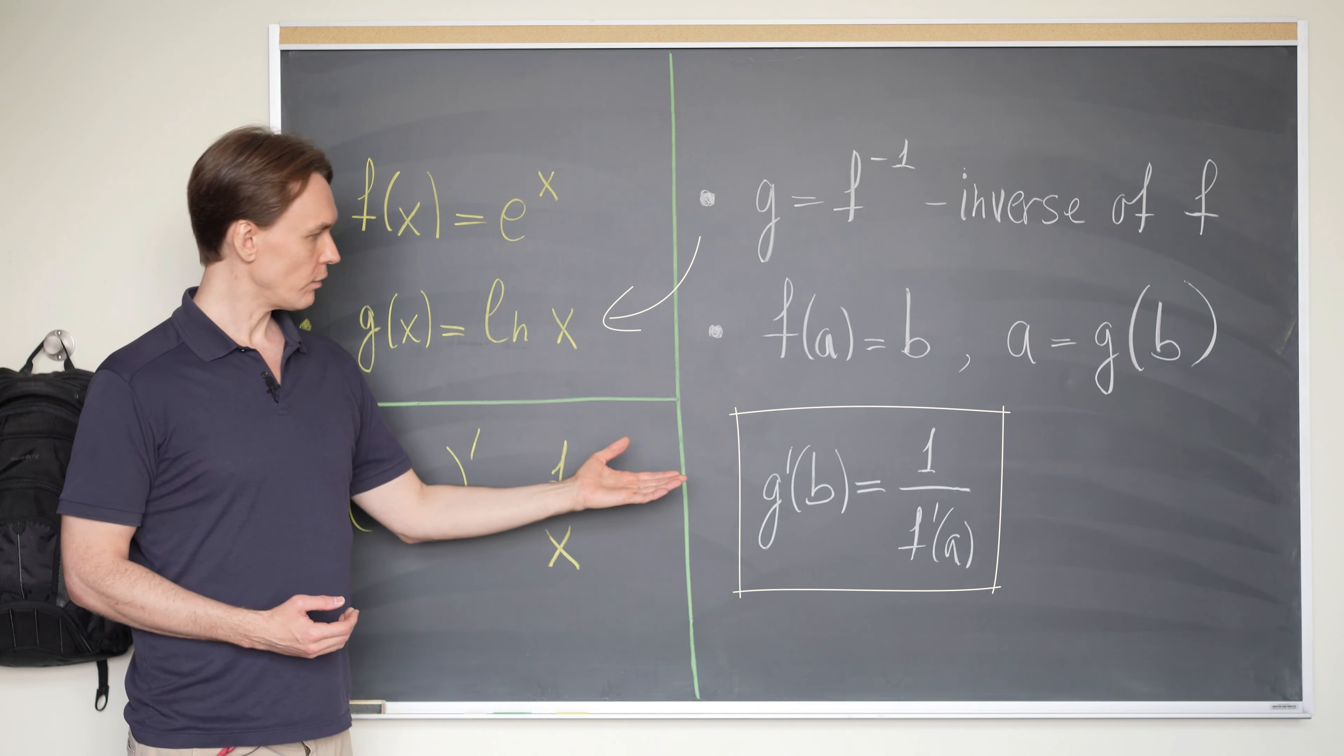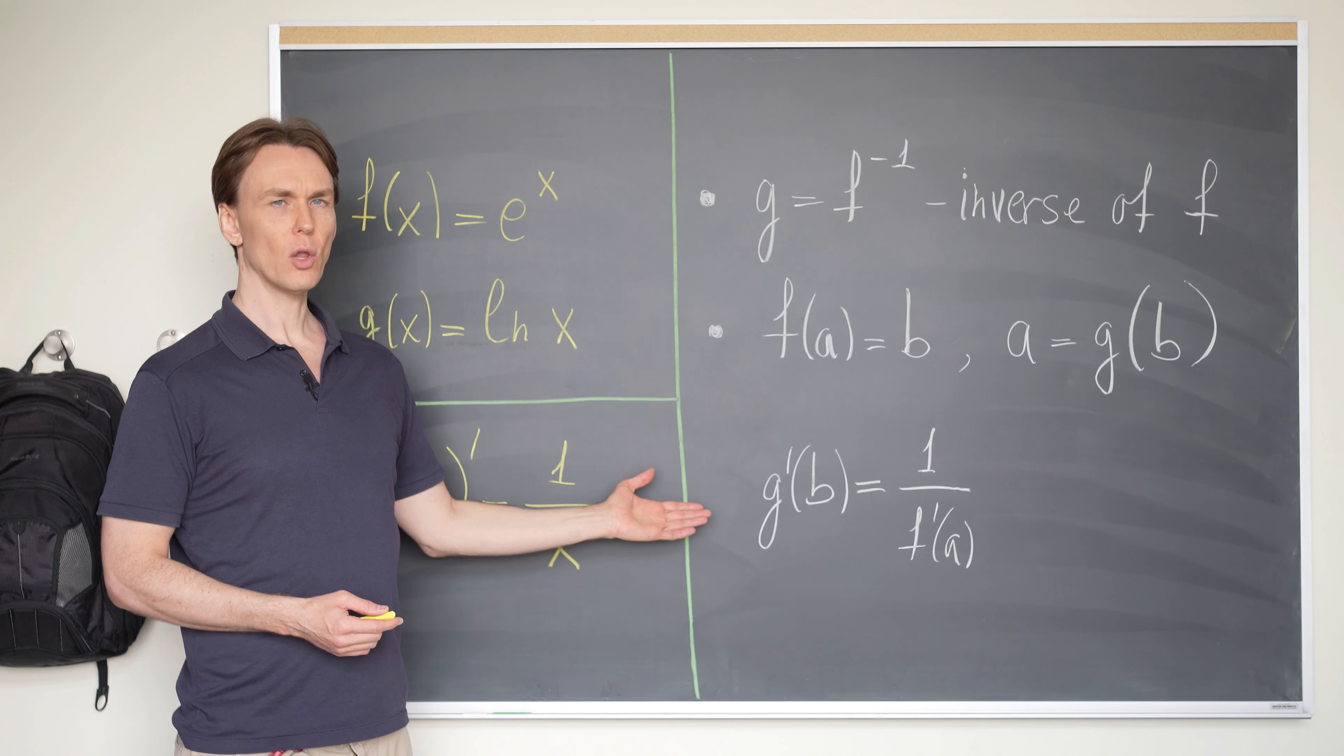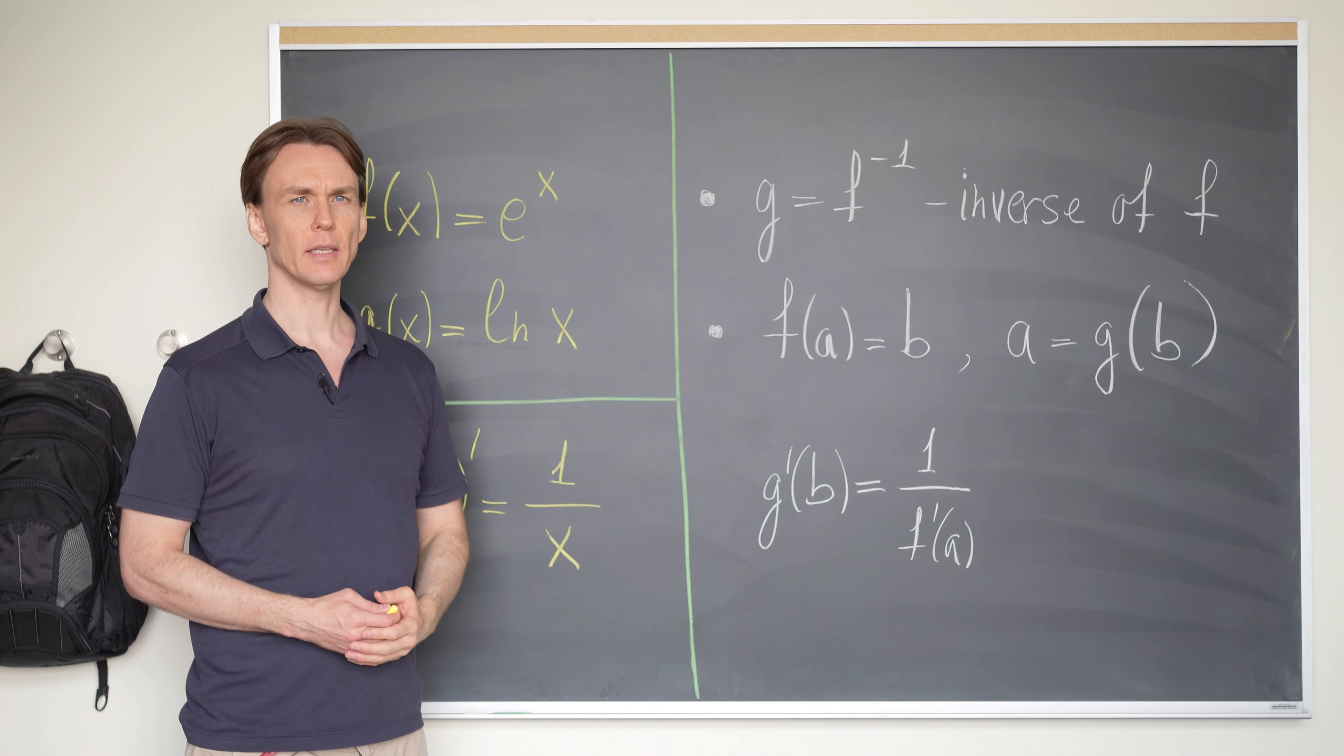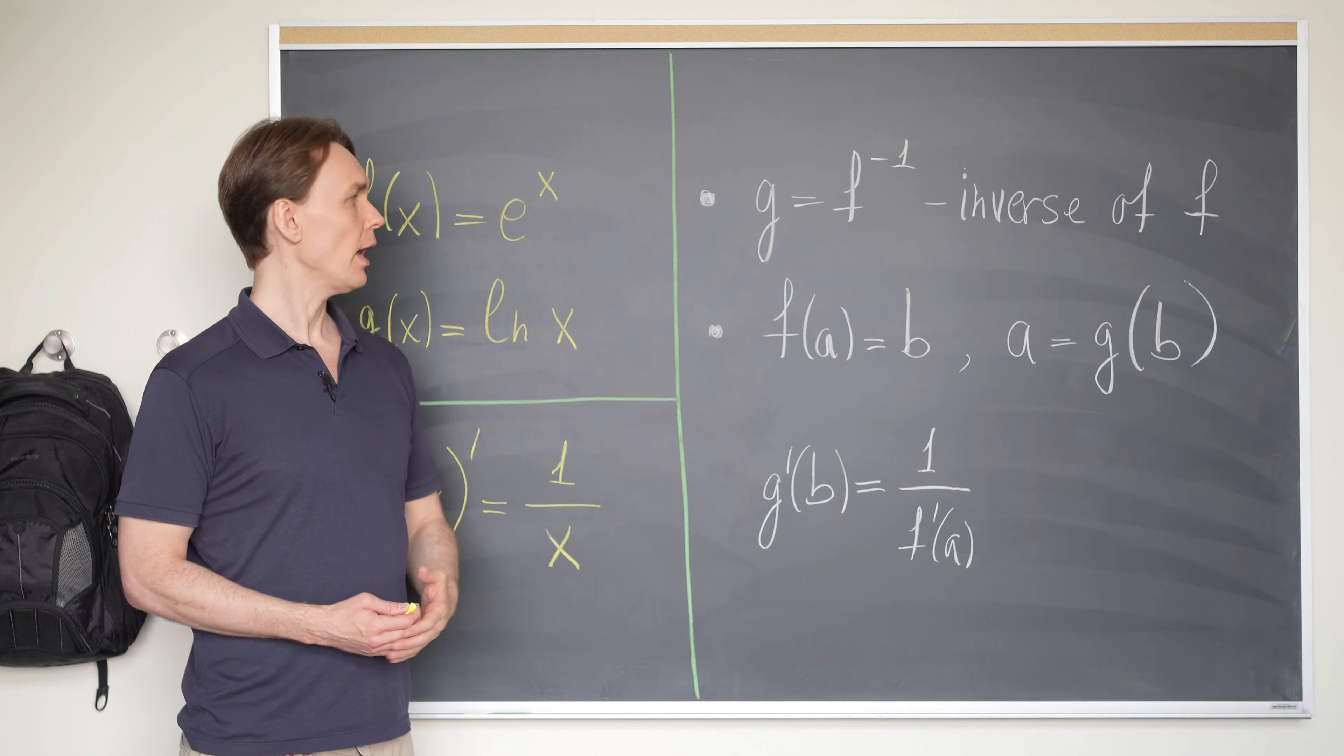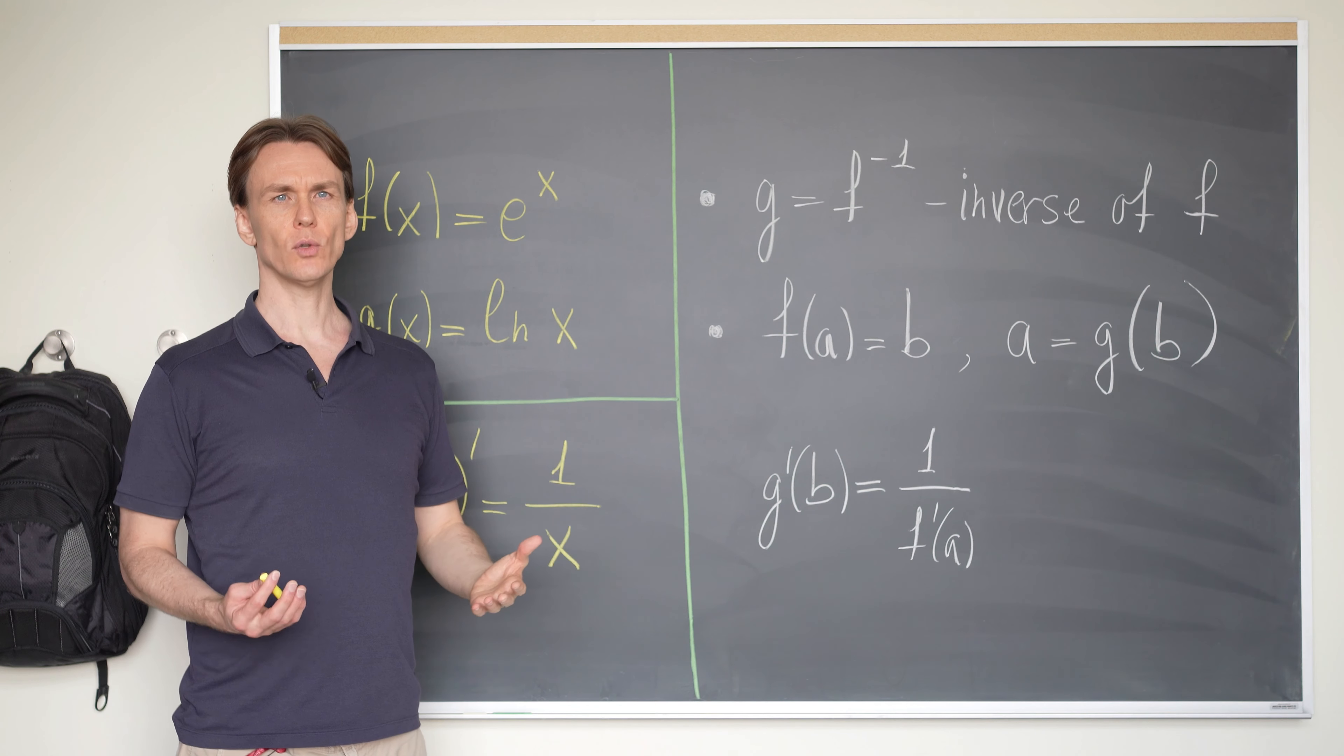Then, what this formula is telling us is that the derivative of natural logarithm at the point b is equal to one divided by the derivative of exponential at the point a. And we know that the derivative of e to the x is e to the x itself.